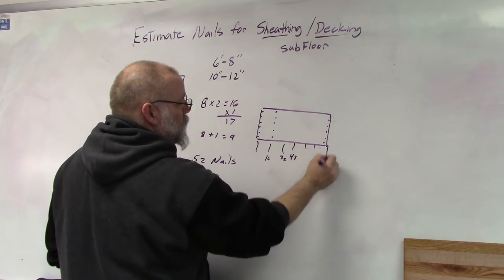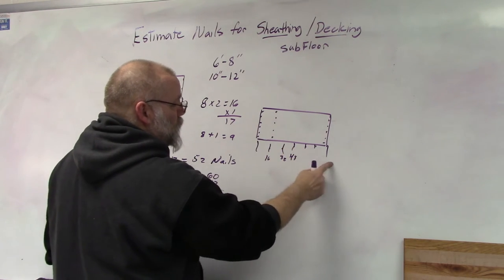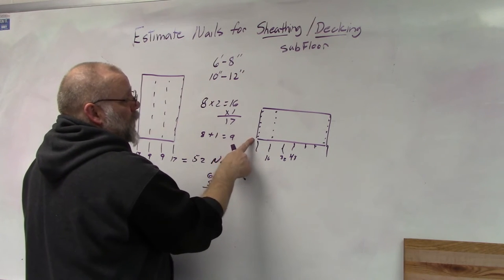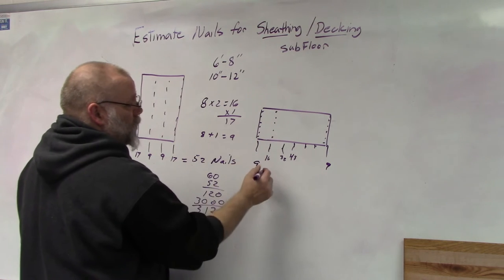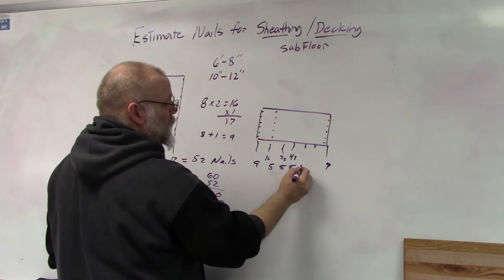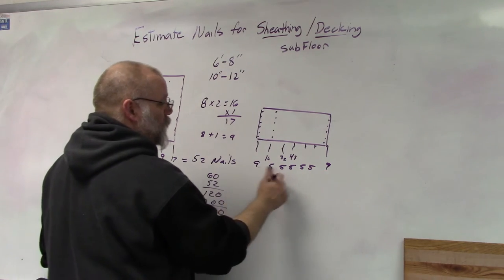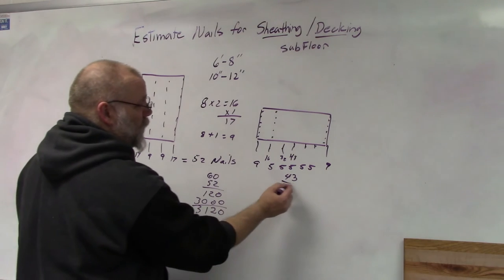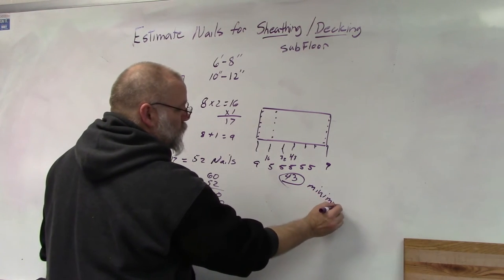You've got 16, 32, 48 on one side, and 16, 32, 48 on the other. So you've got five interior studs and two exterior studs. That would be eight, nine, and nine, and then four feet, so that'll be five. So you've got 25, 34, 43 nails per sheet on the minimum.